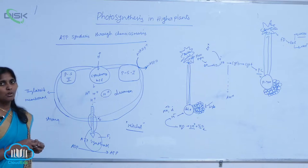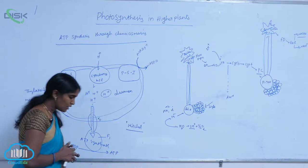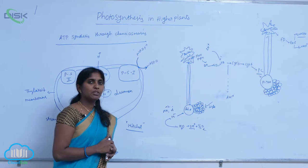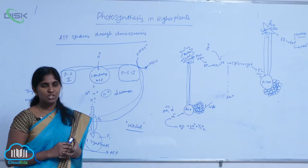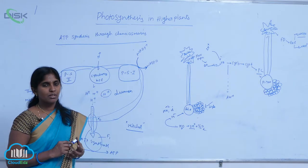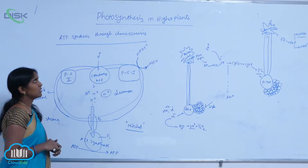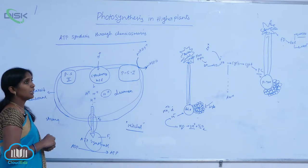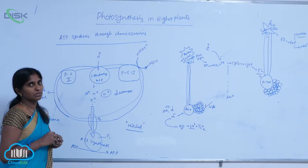ATP synthesis through chemiosmosis. The chemiosmotic hypothesis was proposed by scientist Mitchell. In this hypothesis, ATP synthesis is carried out.